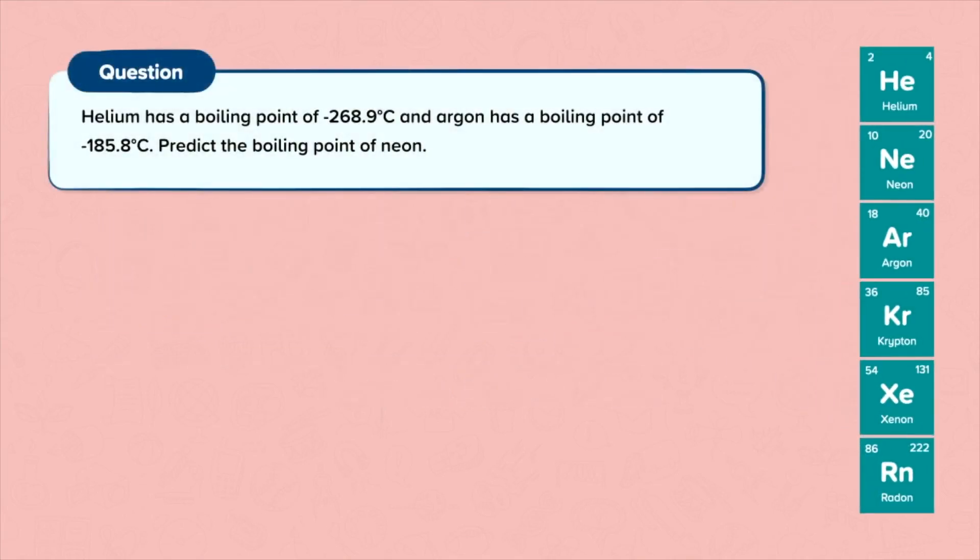So let's have a look at a question. Helium has a boiling point of minus 268.9 degrees Celsius and argon has a boiling point of minus 185.8 degrees Celsius. Predict the boiling point of neon.